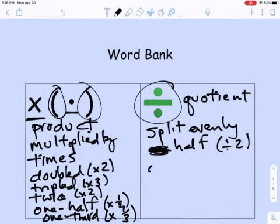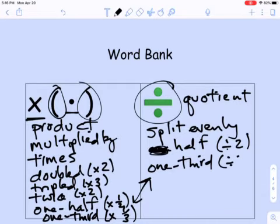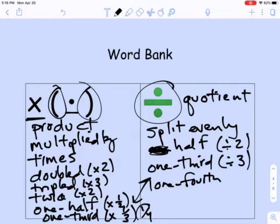They might say half of something, and if they say half, that's another way of saying divided by two. Or if they say one third, this is a case where this could also be division, not just multiplication. One third would be divided by three. If they said one fourth, you could write that as one fourth or divided by four. When you're writing these and using your division signs, always use your fractions.